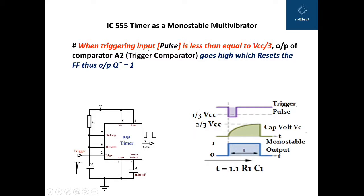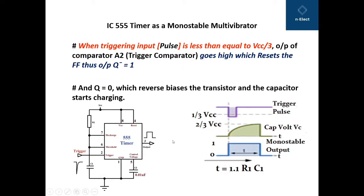When the triggering input is less than or equal to VCC/3, we are talking about the lower comparator. When this negative going pulse goes below VCC/3, the output of lower comparator — that is comparator A2, also called trigger comparator — goes high, which resets the flip-flop and therefore Q-bar becomes 1. As the triggering pulse goes below 1/3 VCC, the output of the monostable multivibrator goes high and Q becomes 0. Since Q-bar equals 1, Q becomes 0, which reverses the transistor and the capacitor starts charging.